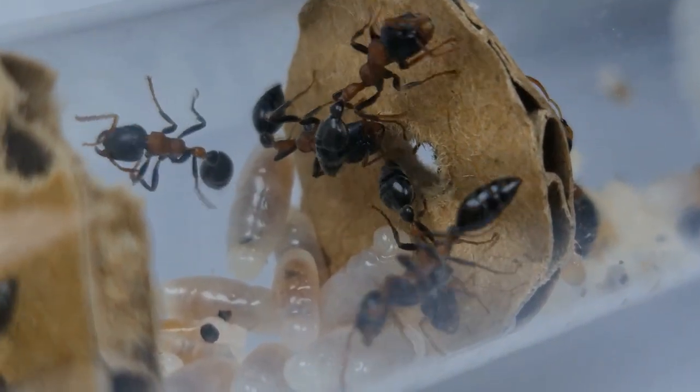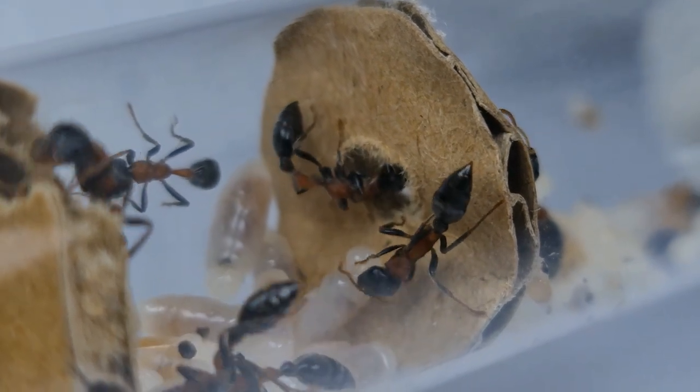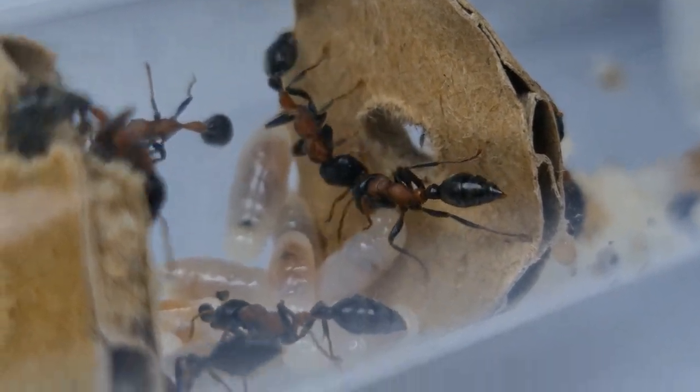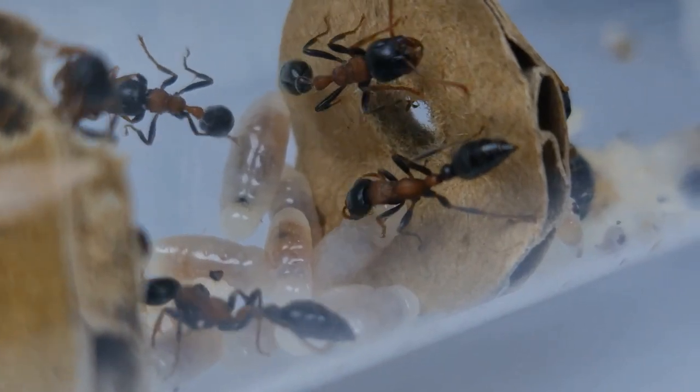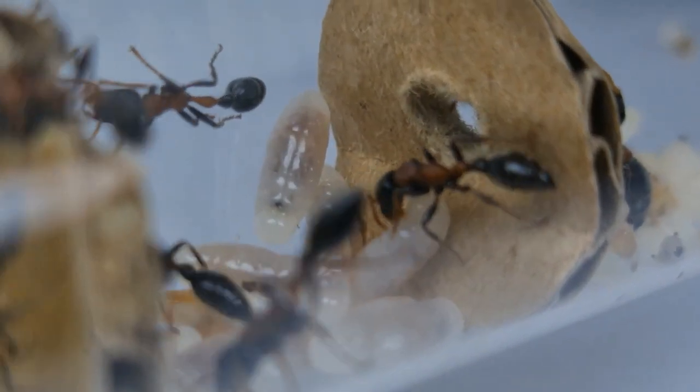Last but not least, do wipe down the outworld to give her a clean living environment. She will bring out trash into the outworld where she will stick it at the corner, mainly larvae poops and food scraps. I clean those off every two weeks or so.